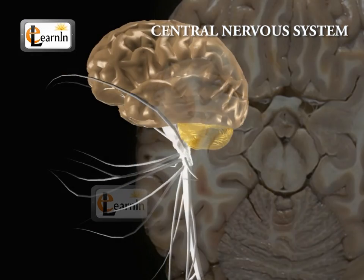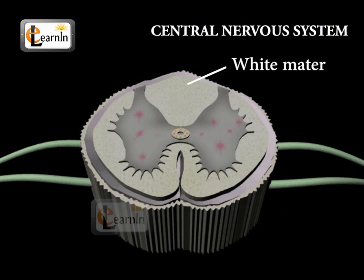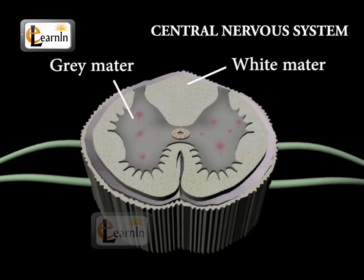In the spinal cord, the white matter is on the surface and the inner gray matter is in the deeper layer.